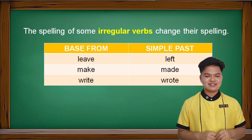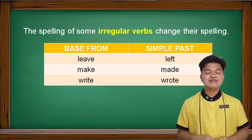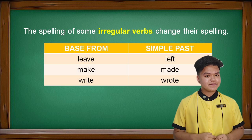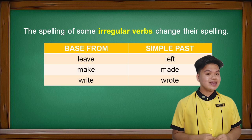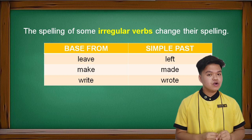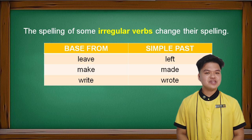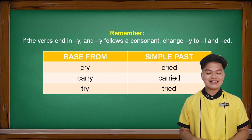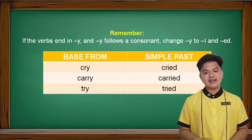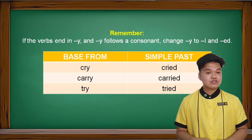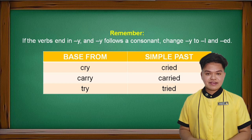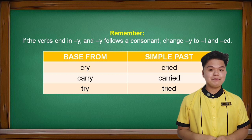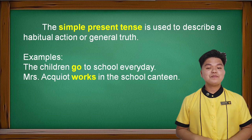But did you know that the spelling of some irregular verbs does change? For example: 'leave' to 'left,' 'make' to 'made,' and 'write' to 'wrote.' These are irregular verbs that change. Always remember: if a verb ends in Y and Y follows a consonant, change Y to I and add -ED. For example: 'cry' to 'cried,' 'carry' to 'carried,' 'try' to 'tried.' That is the simple past tense.